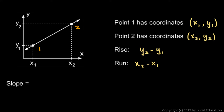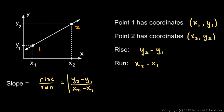So the slope, which is always rise over run, will be y2 minus y1 over x2 minus x1. And that's a nice little formula for the slope. If you have two points and you know the x and y coordinates — in other words, if you knew all four of those numbers — you could just put them in and calculate the slope.